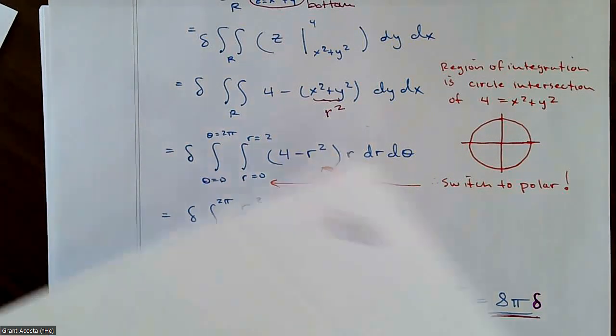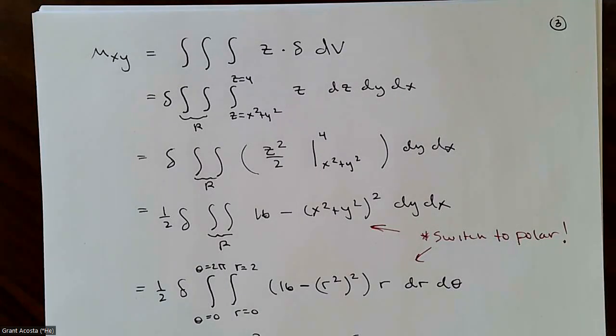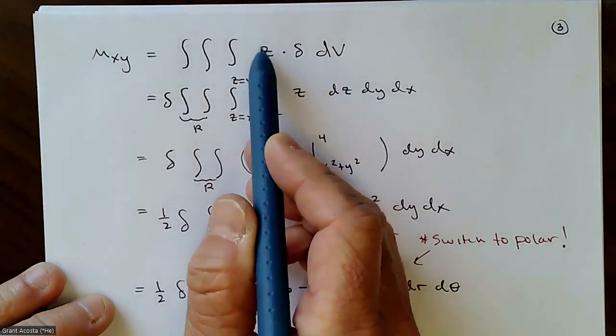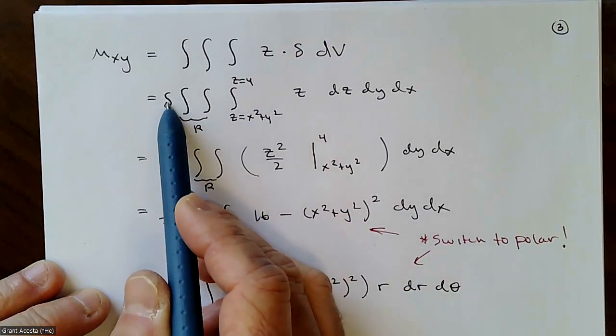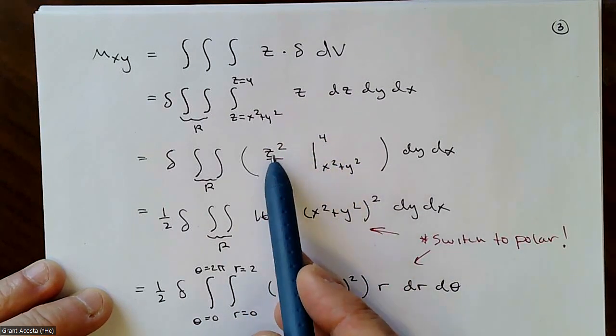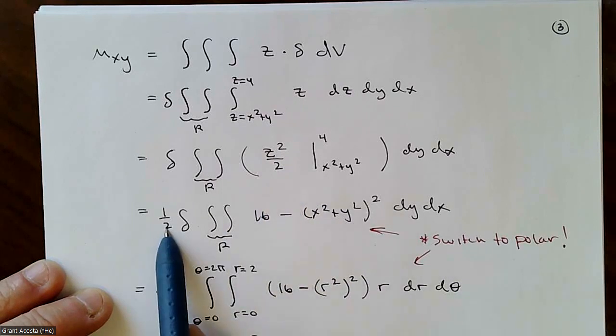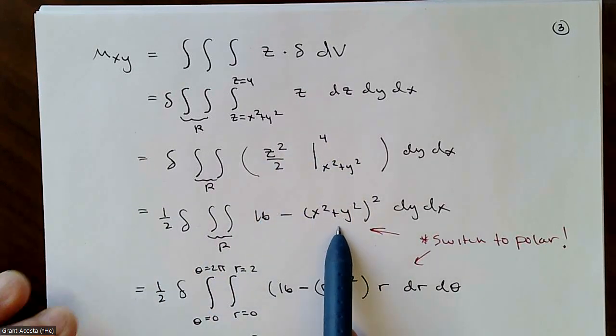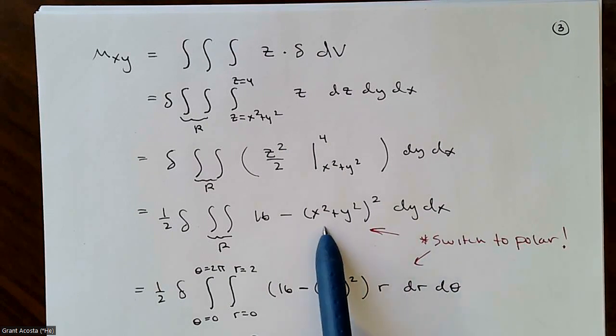Now we have another triple integral to work out, which is the moment about the xy plane. So that is defined to be the triple integral z times basically the mass, the same integral we did. So now we're just going to throw in an extra z. I still pulled out the delta. That affects this because my antiderivative now with respect to z is z squared over 2. If I plug in, I get 16 over 2 minus this over 2. I know what I did. I pulled out the one half because I didn't want to deal with that fraction. That's a constant. I can pull it all the way out if I want to. So that's just 16 minus this squared. And same idea. I can see I'm going to have to integrate over that circle again. This is going to work much better in polar coordinate. So at this point, I switched to polar.